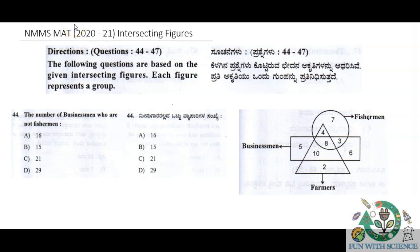Hey guys, welcome to Fun with Science. Today we are going to talk about NMMS MAT and Mental Ability in the 2020-2021 question paper. The intersecting figures part is from question number 44 to question number 47. The following questions are based on given intersecting figures. Each figure represents a group.